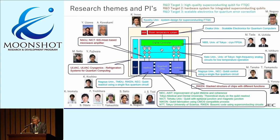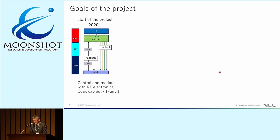This figure shows a sketch of the future superconducting quantum computer system we are trying to build. Each PI is responsible for individual technologies shown in the figure. Most PIs focus on hardware development, but we also have Professor Koji Inoue from Kyushu University as a computer architecture PI, who will investigate how to orchestrate these technologies as a total computer system from the viewpoint of computer science. This explains the goals of the project: currently we control and read out qubits using room-temperature electronics.